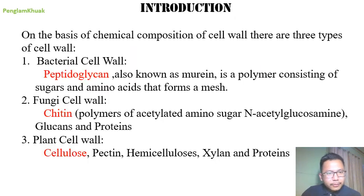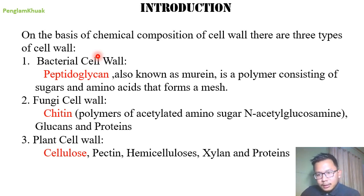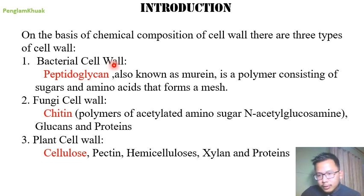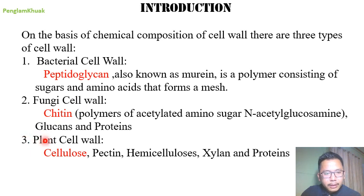On the basis of chemical composition of cell wall, there are three types: number one is bacterial cell wall, number two is fungi cell wall, and number three is plant cell wall.